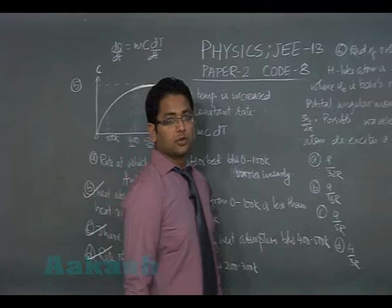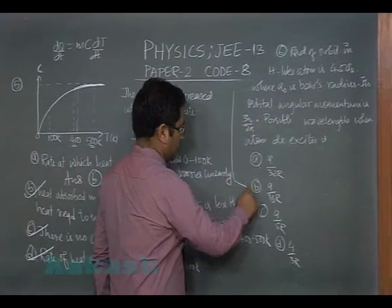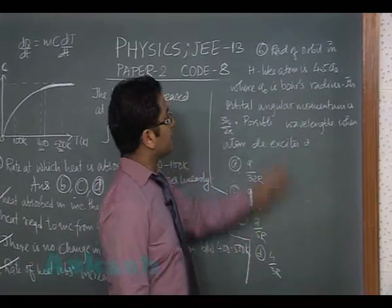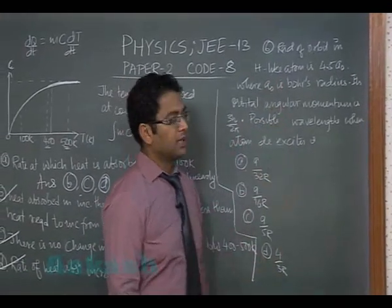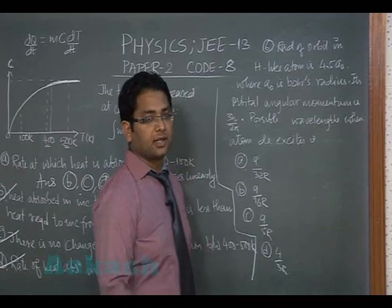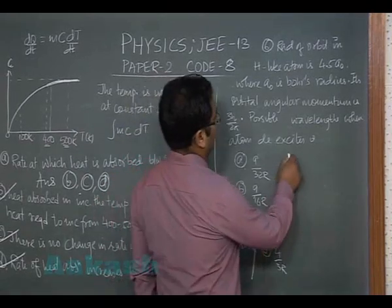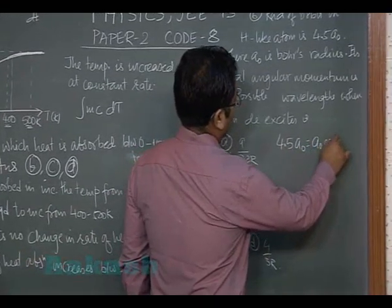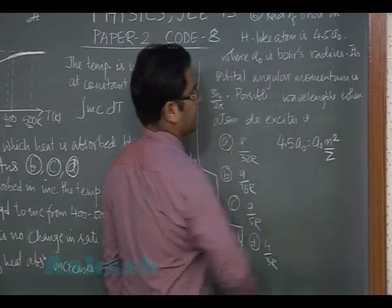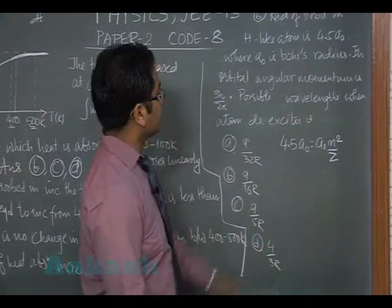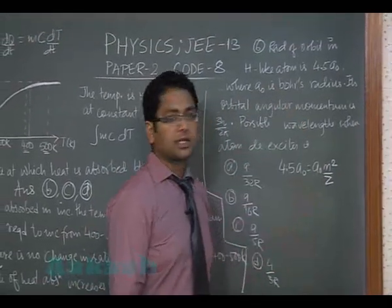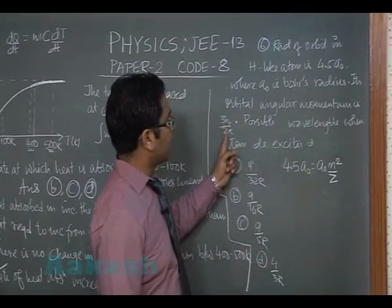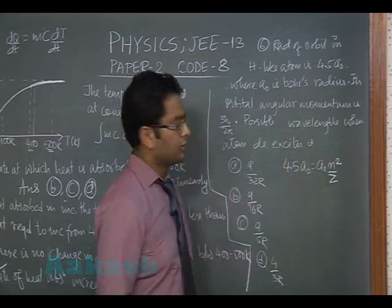Now let's go to question number six, brought from modern physics - Bohr's atomic model. Radius of orbit in hydrogen-like atom is 4.5a₀. That means that's going to be 4.5a₀, which equals a₀n²/Z, because it's been said a₀ is the Bohr radius. Its orbital angular momentum is 3ℏ/2π, indicating n equals 3.